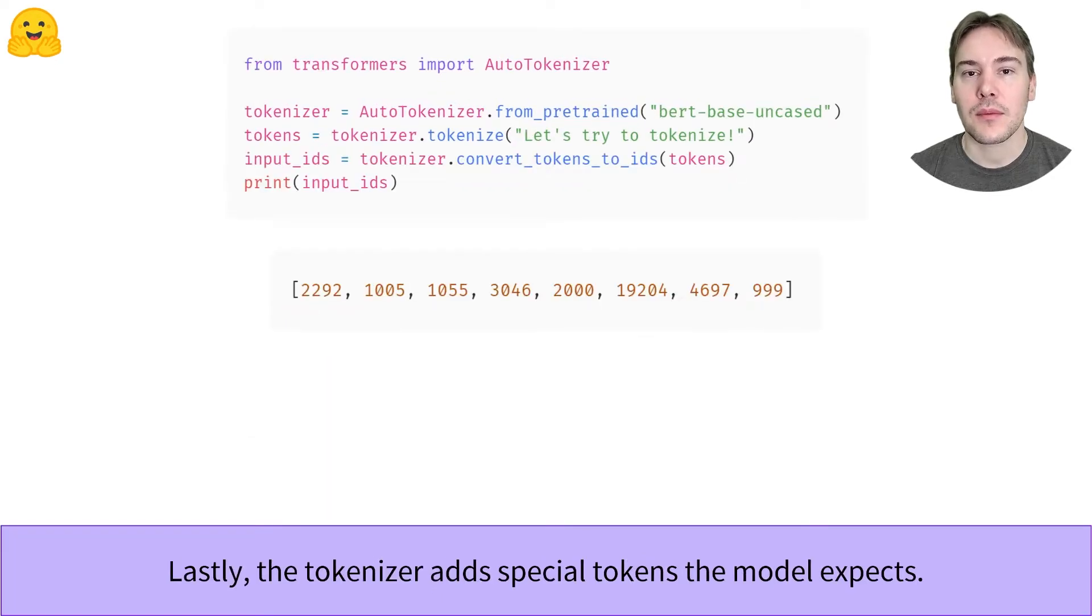The second step of the tokenization pipeline is to map those tokens to their respective IDs, as defined by the vocabulary of the tokenizer. This is why we need to download a file when we instantiate a tokenizer with the from_pretrained method. We have to make sure we use the same mapping as when the model was pretrained. To do this, we use the convert_tokens_to_ids method.